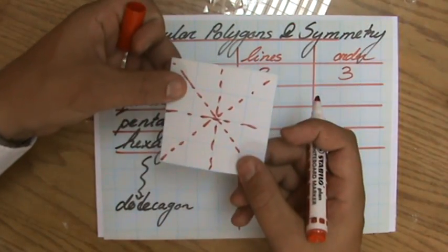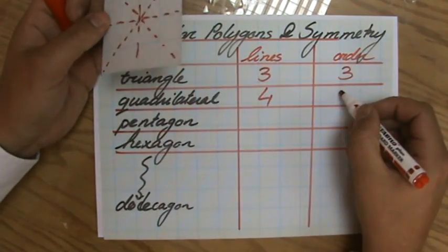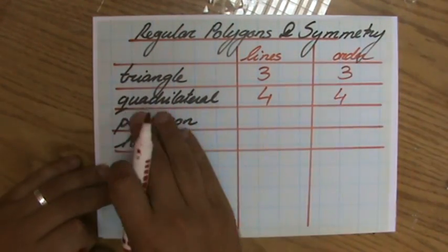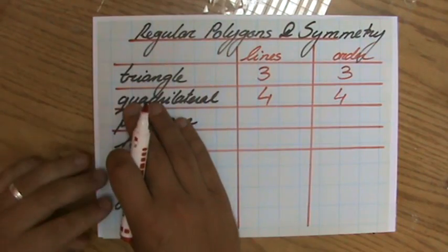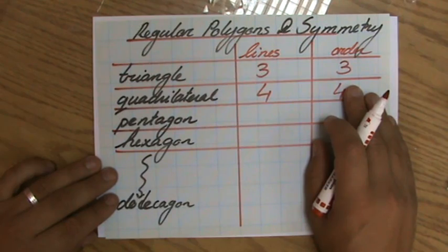And what about the order of rotational symmetry? One, two, three, four, also four. Hang on a minute. So for a regular quadrilateral, the four lines of symmetry is also rotational symmetry of order four.